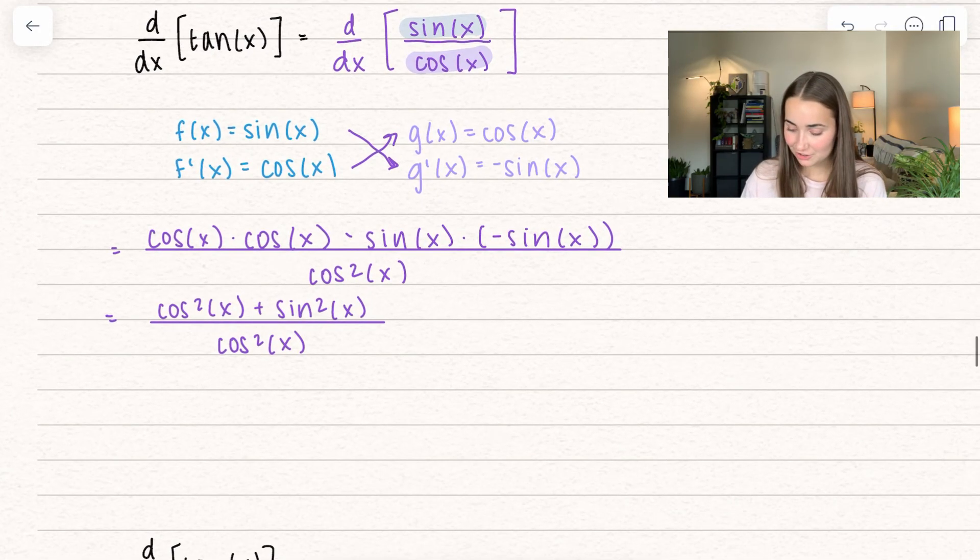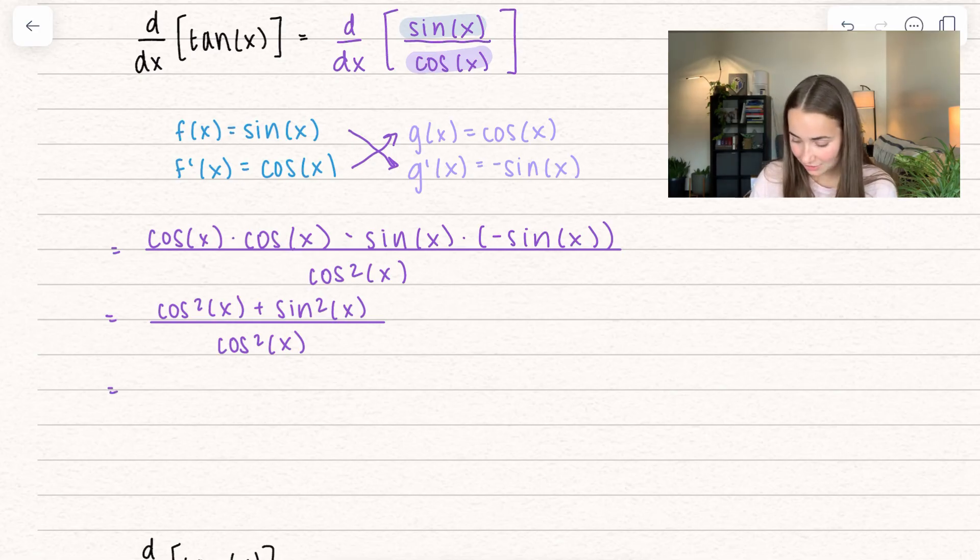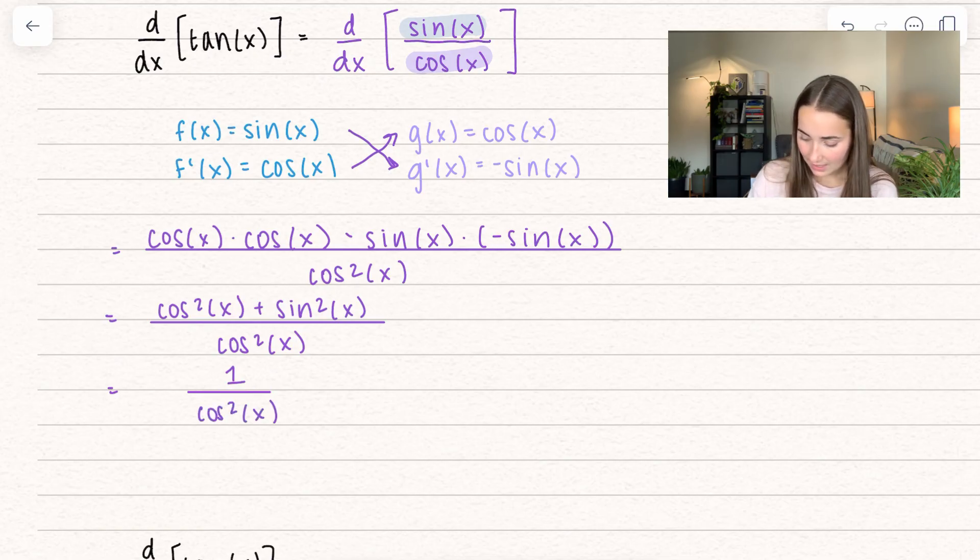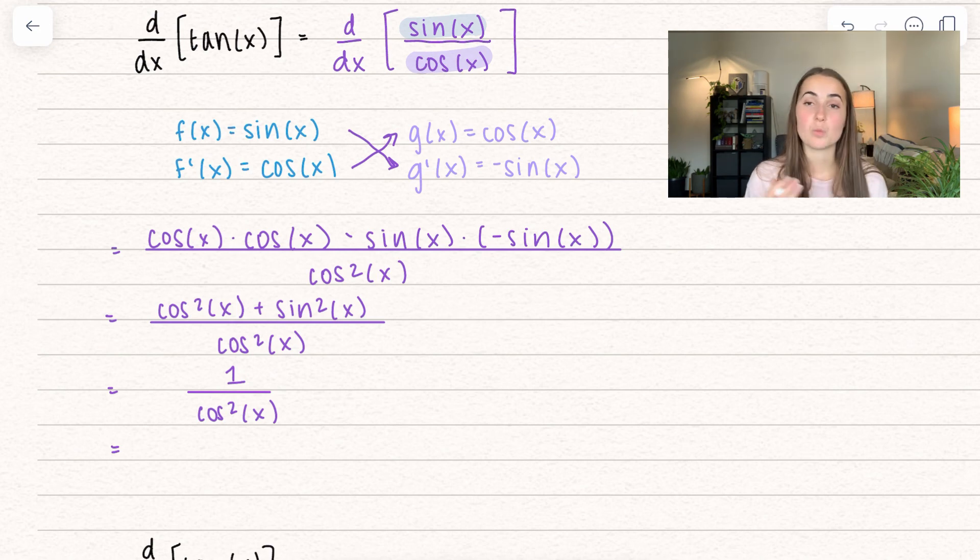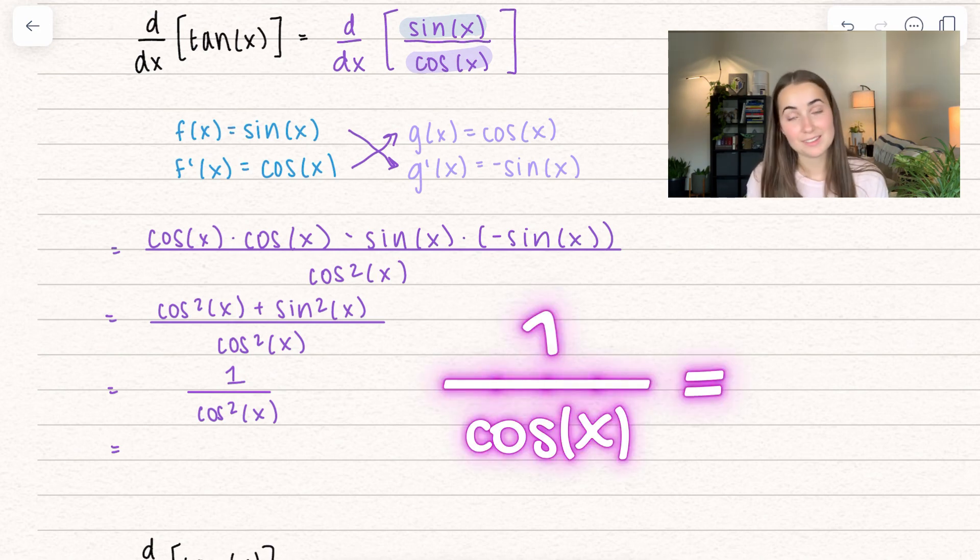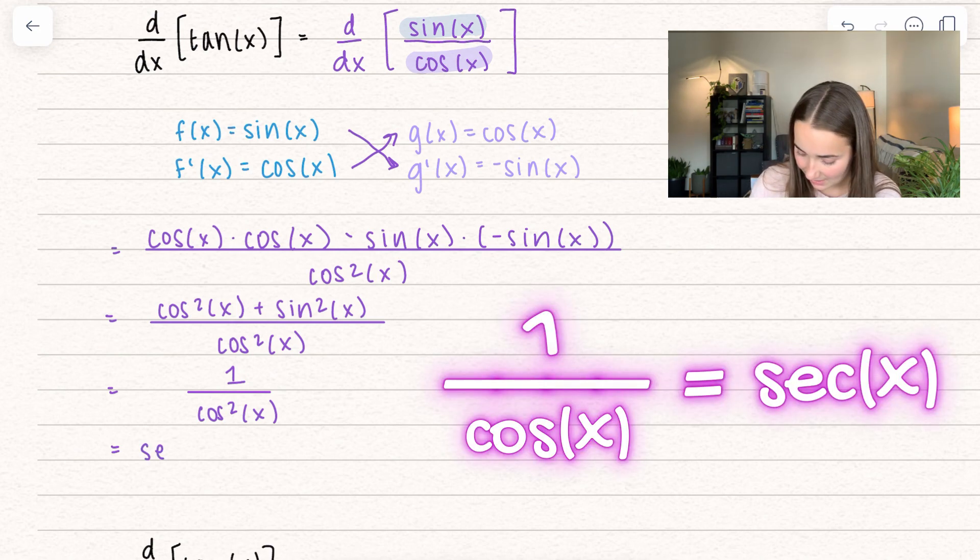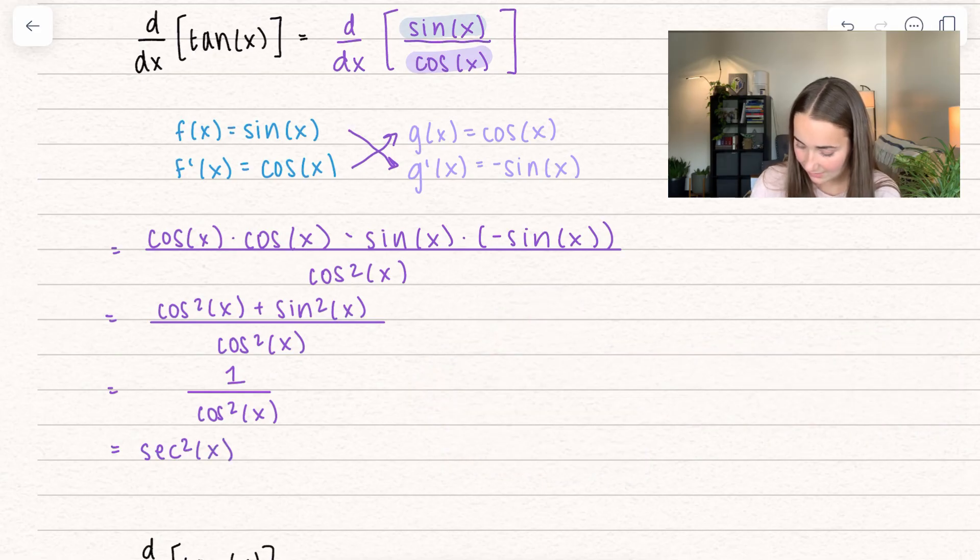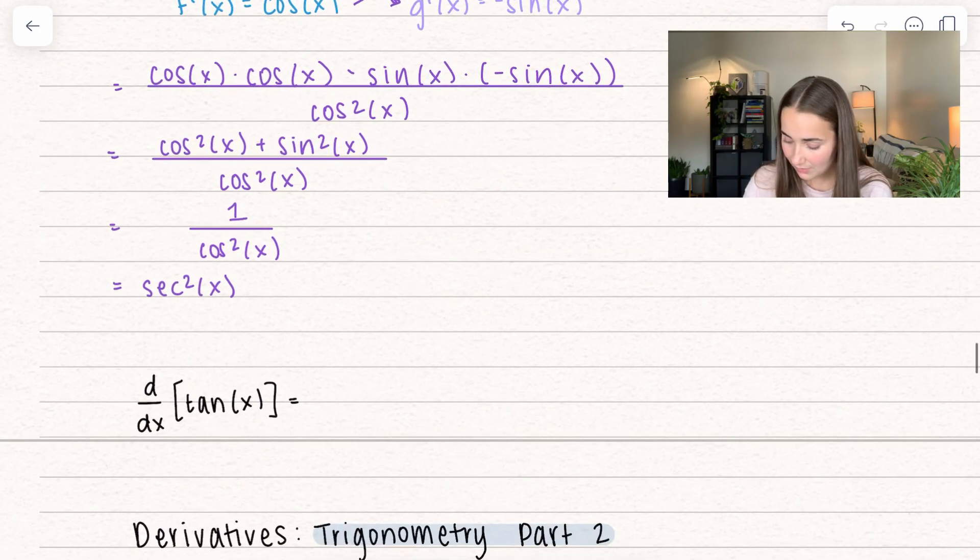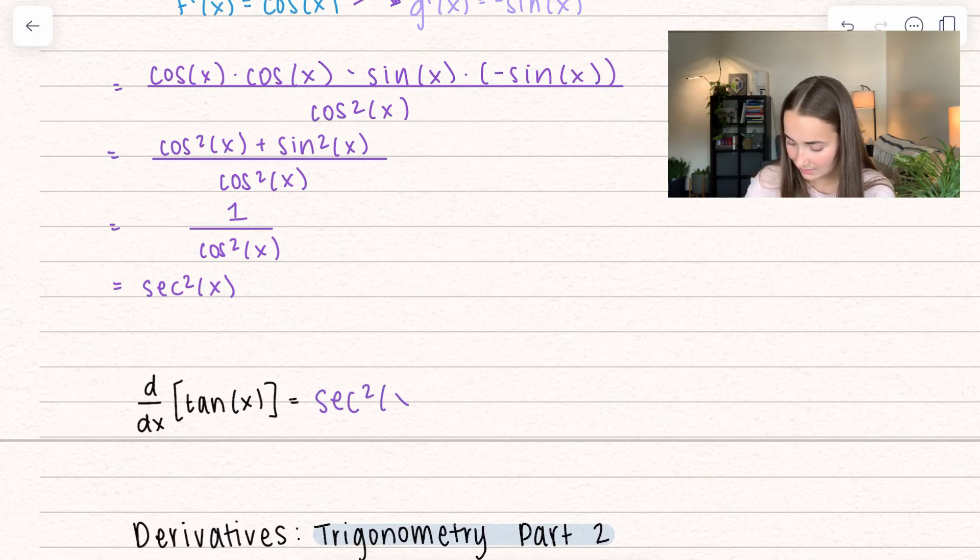Notice we have an identity in the numerator. Cosine squared x plus sine squared x is actually equal to 1 and all of this is still being divided by cosine squared of x. I can rewrite this one more time because 1 over cosine of x equals secant. So this becomes secant squared of x. The derivative of tangent of x is actually equal to secant squared x.